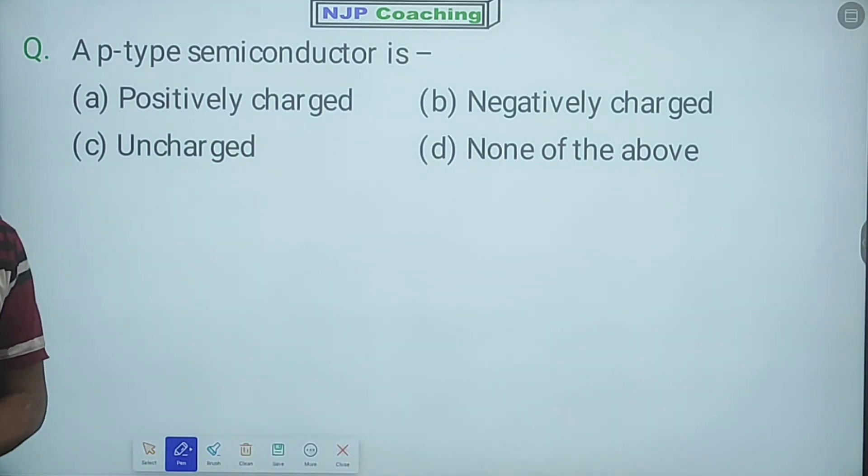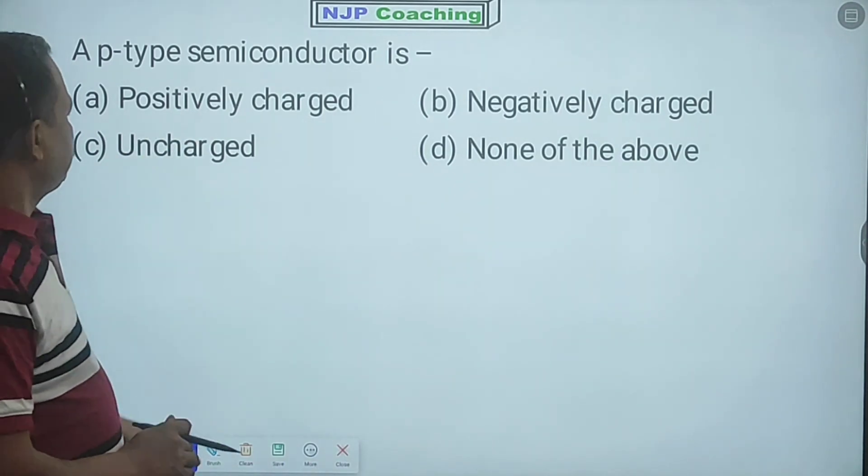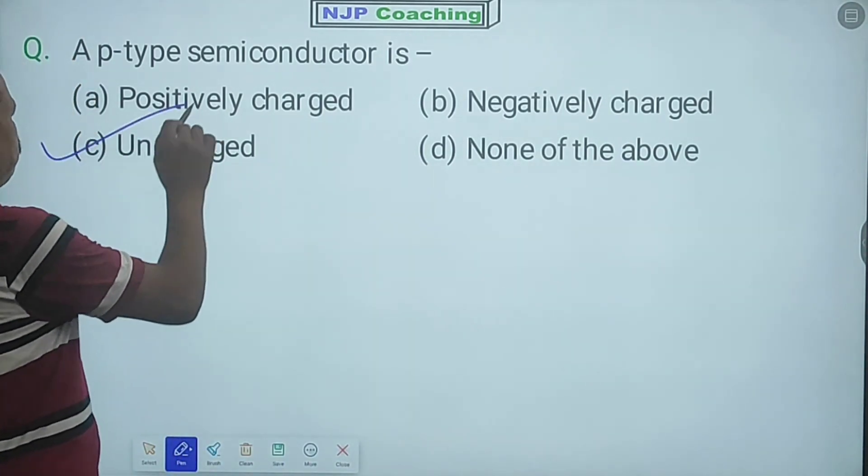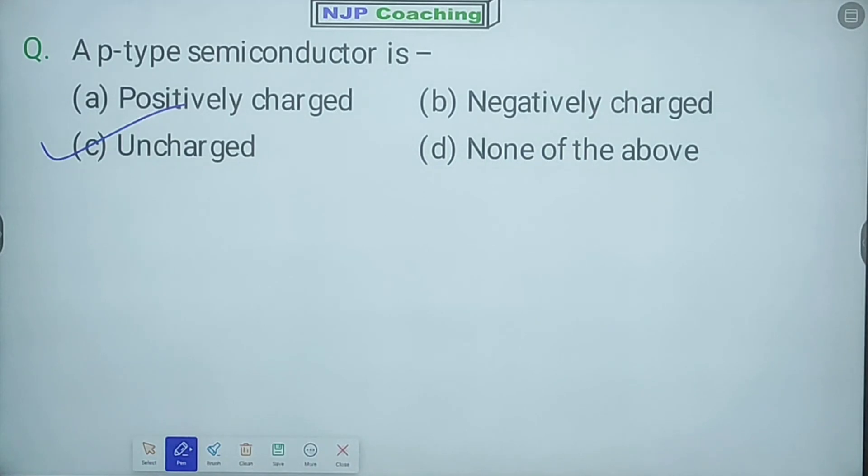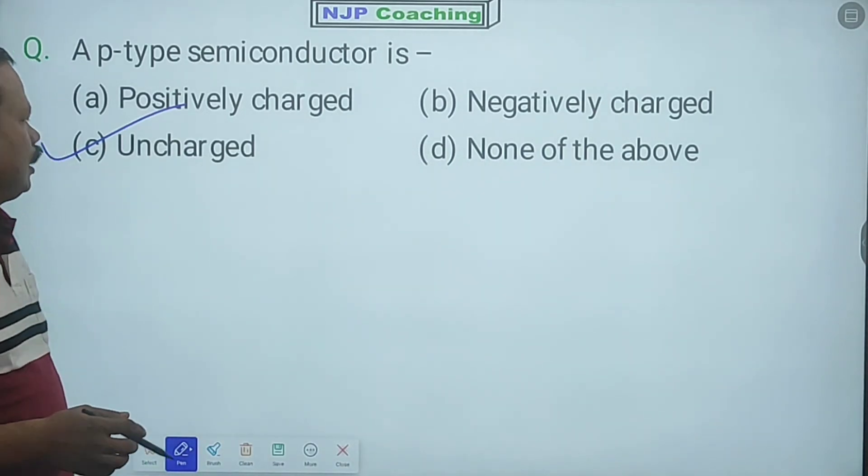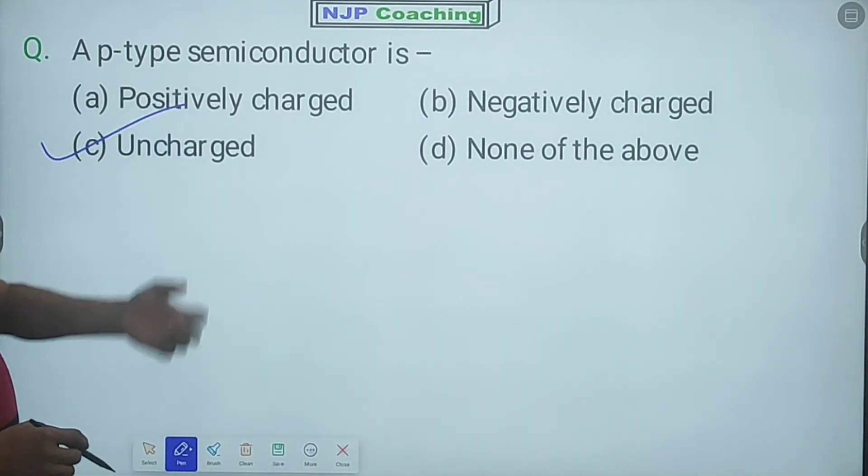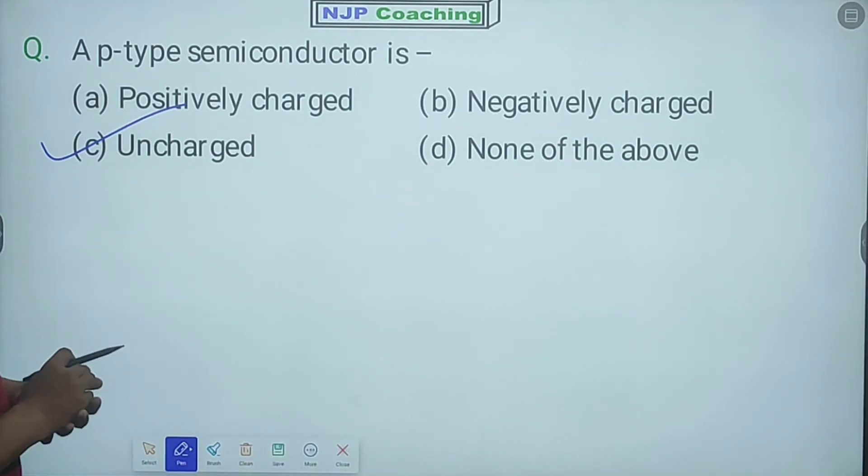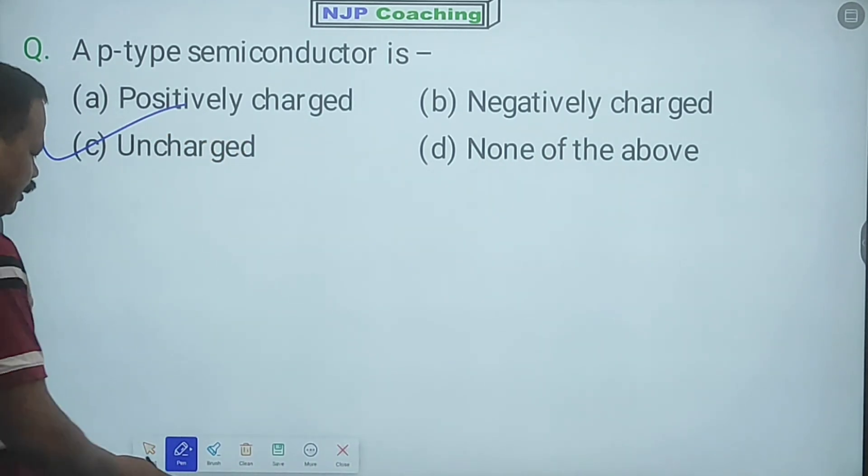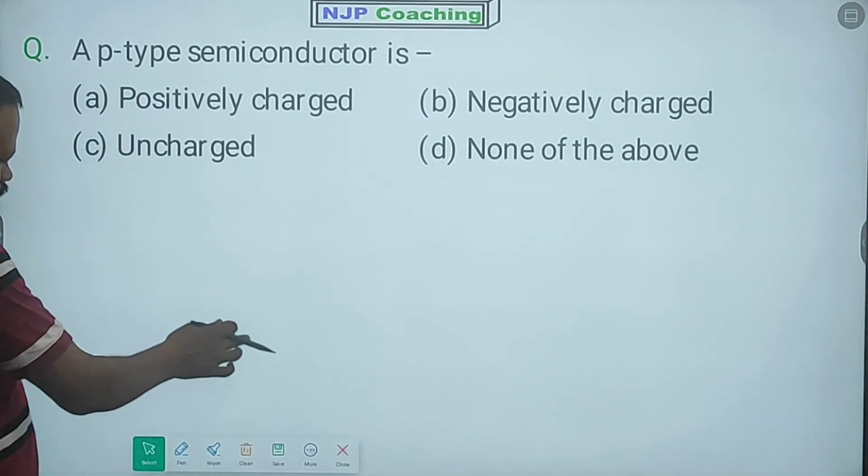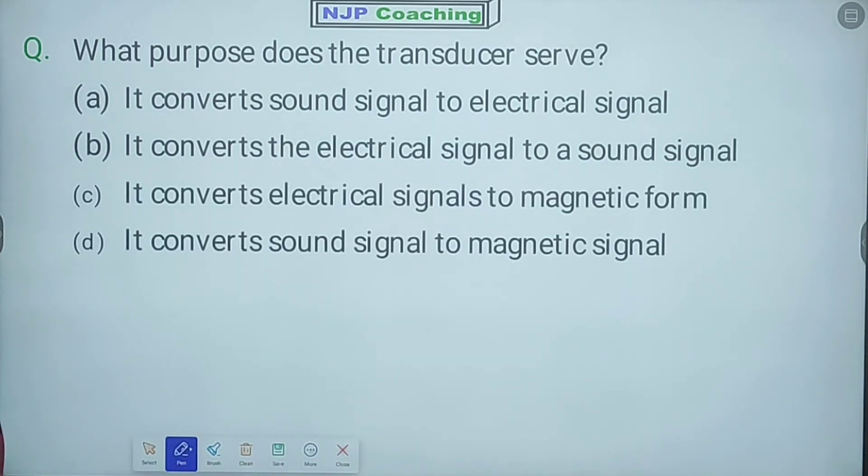A P-type semiconductor is positively charged, negatively charged, or uncharged? P-type semiconductor is uncharged. So uncharged - not positive, not negative. Uncharged. Okay? Next question.